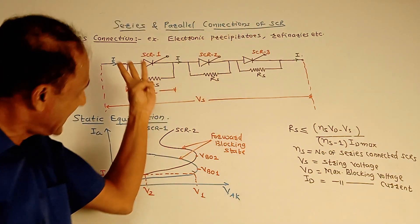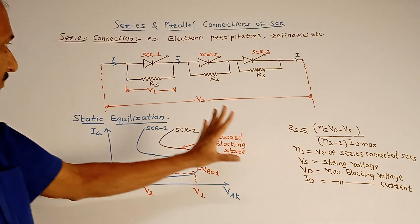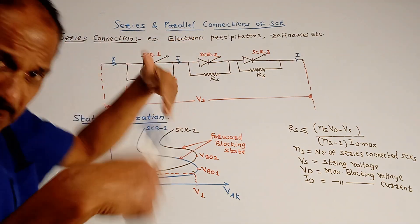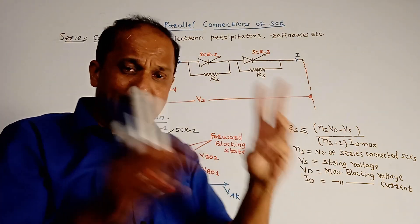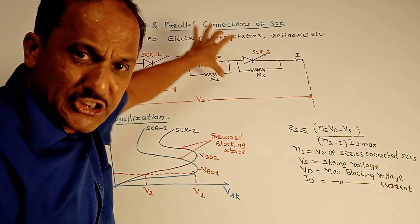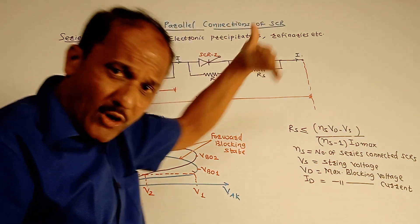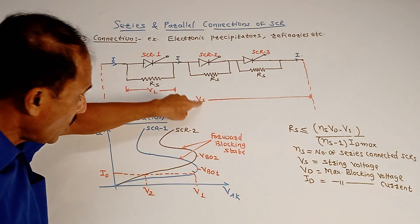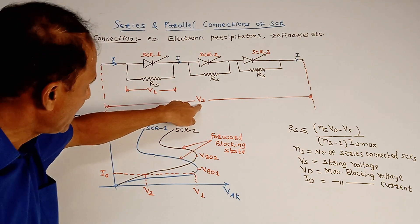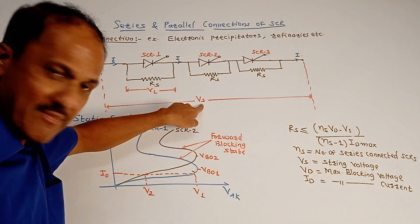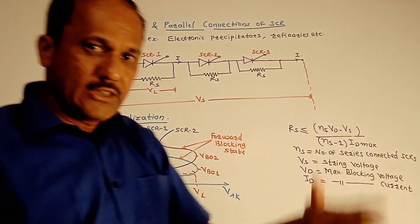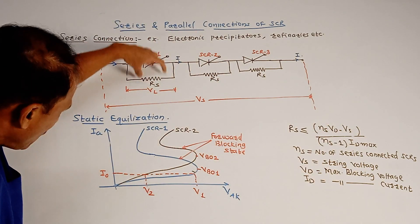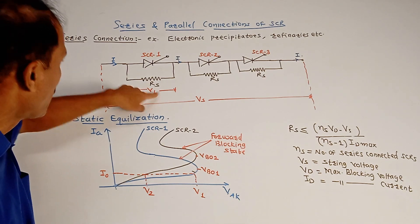That means these three SCRs are connected in series. Now the entire voltage across this series combination is called a string, string of SCRs. You may go on increasing number of SCRs depending on the voltage requirement. So the total voltage available for this series combination is called string voltage, denoted by Vs, whereas the voltage across individual SCR, for example SCR1, is denoted by VL, that is link voltage.